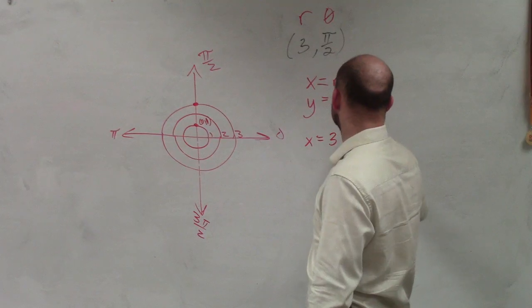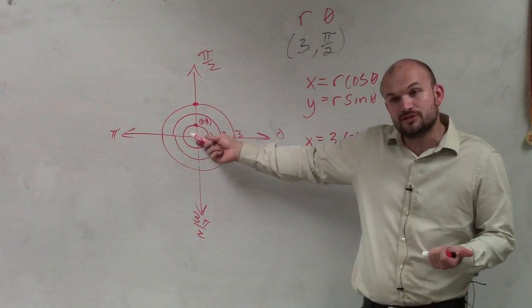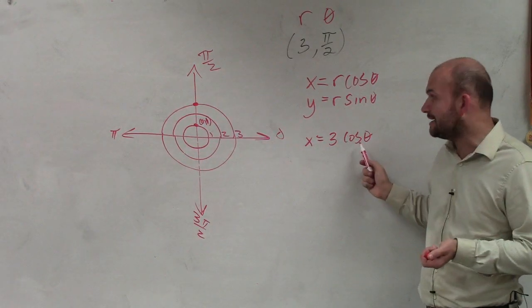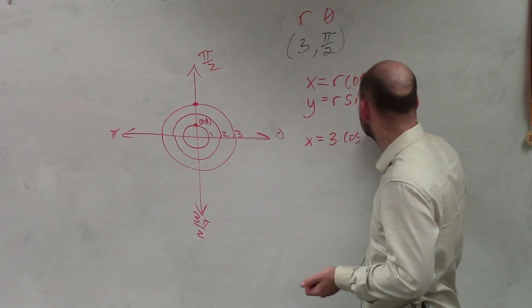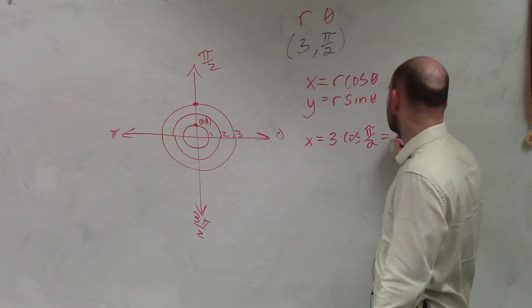x equals radius, which is 3, times the cosine of theta. Remember, cosine of theta is based off of what that unit circle, when you have the unit circle, when you have your radius is 1. So cosine of theta, I'm sorry, cosine of pi halves is 1, right? 1 times 3 equals 3.